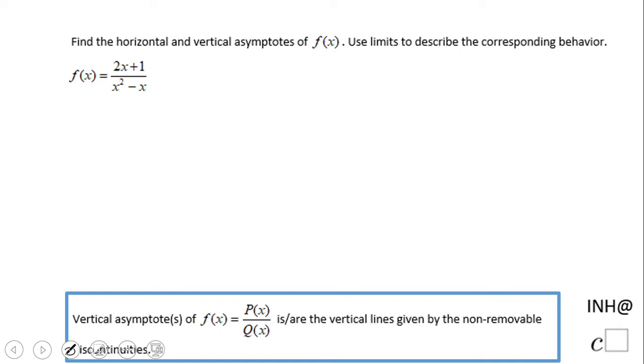Let's start first with vertical asymptotes. As you notice, vertical asymptotes are vertical lines given by non-removable discontinuities. How do we find those? We're going to take the bottom of the rational expression, the denominator, which is x squared minus x in this case, and make it equal to zero.